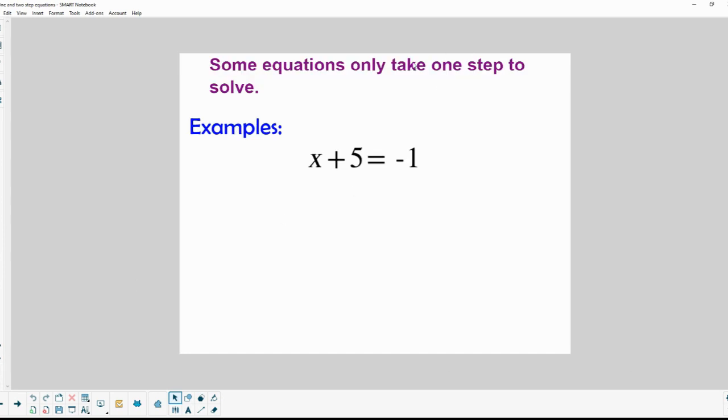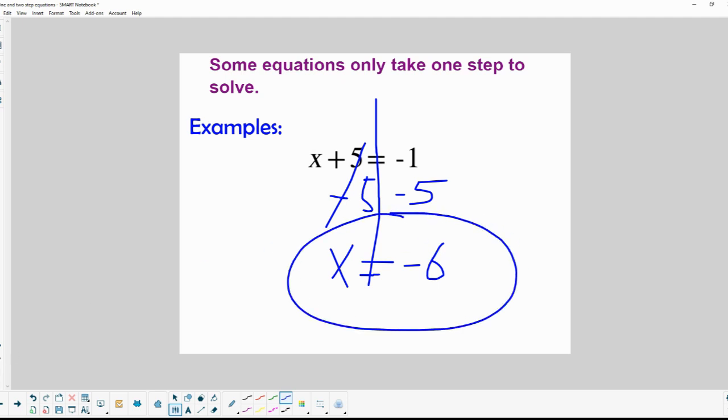So here's a couple of examples. Some equations only take one step. So I want to isolate x on the left side of the equal sign here. I'm going to put a line here representing the equal sign or the Great Wall of China. In order to get x isolated I have to remove this plus 5. Well, the inverse operation of adding 5 is minusing 5. So on both sides of this equal sign I'm going to subtract 5. That will leave me with just x isolated on the left side. And negative 1 subtract 5 is negative 6. So that would be my answer on the first example problem.